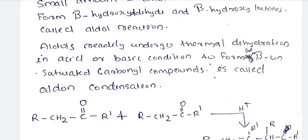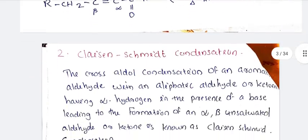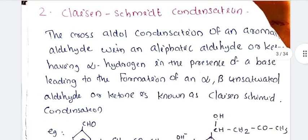So the reaction is aldol condensation. When we use an aromatic aldehyde with an aliphatic aldehyde or ketone, we call it cross aldol condensation — also called Claisen-Schmidt condensation. Here we use an aromatic aldehyde, and that is why we call it cross aldol condensation.